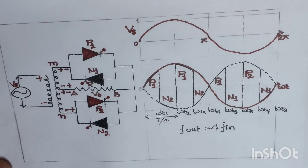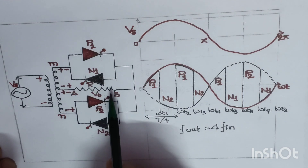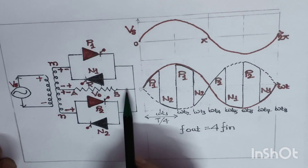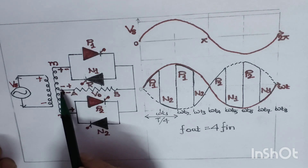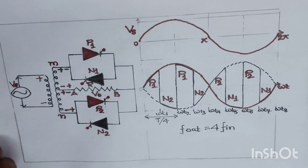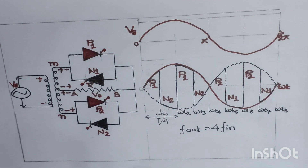Let us discuss the midpoint type of cycloconverter. It is called the midpoint type because the load resistance R is connected at the midpoint or center of the secondary of the transformer. That is why we call it a midpoint type cycloconverter.